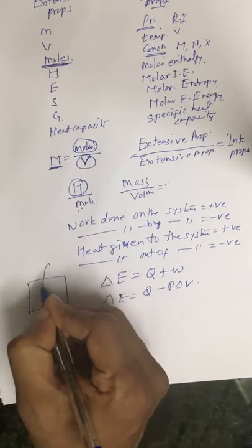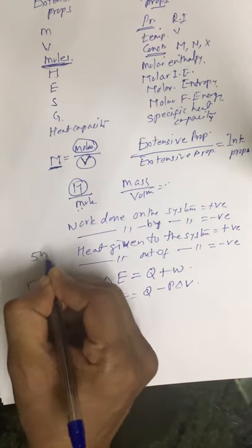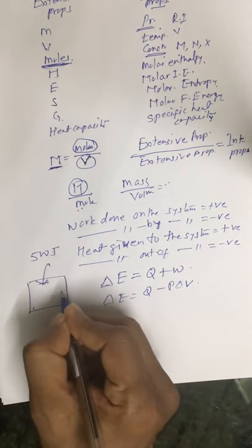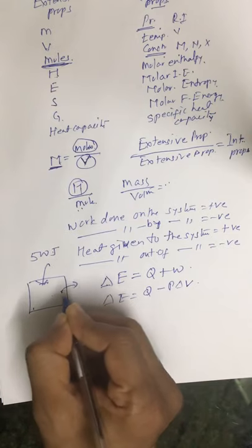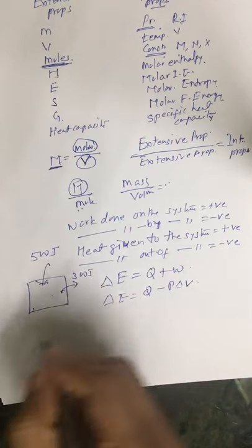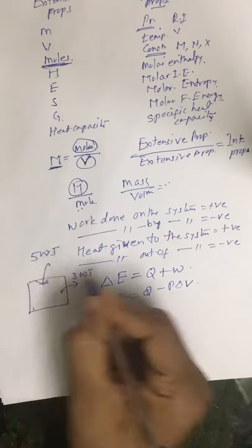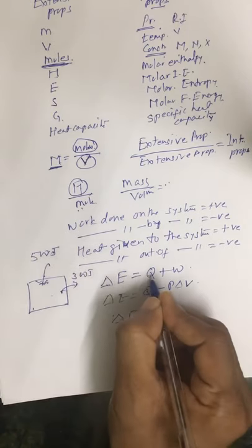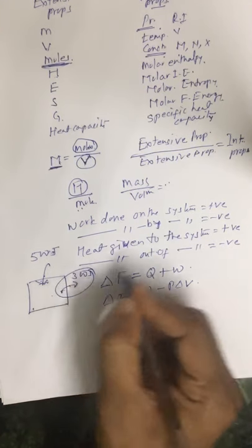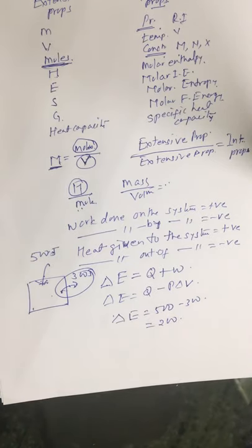Suppose we have a system to which we supply 500 joules of energy, and the system does work equal to 300 joules. What is the value of ΔE? Heat given to the system is positive, so q = +500. Work done by the system is negative, so w = −300. Therefore, ΔE = 200 joules.